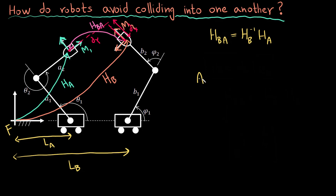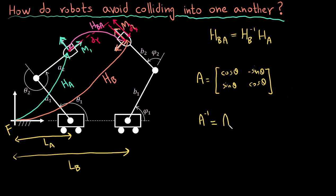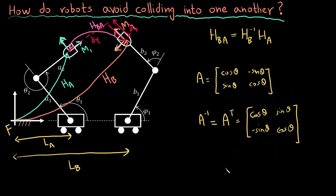The rotation matrix A is always of the form: cosine θ, sine θ, minus sine θ, cosine θ. The inverse of this matrix is simply its transpose, so A inverse equals A transpose, which gives cosine θ, cosine θ, sine θ, minus sine θ. You can verify this because a matrix times its inverse must equal the identity matrix.